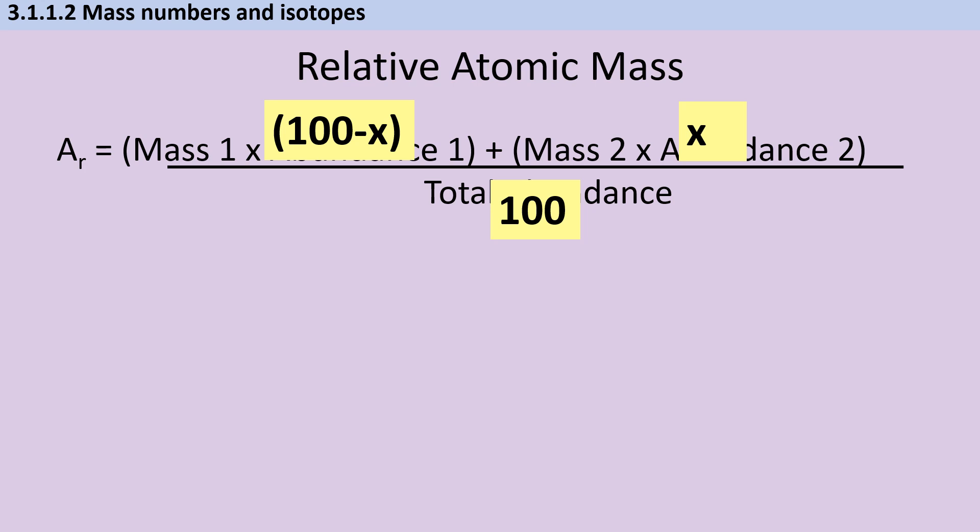So we have an equation set up like this. So I have the first mass, which is my lighter isotope, multiplied by 100 take away X, and my second mass multiplied by X, and then the whole lot divided by 100, which is the total abundance.